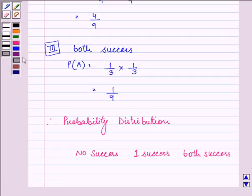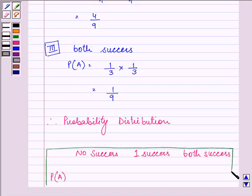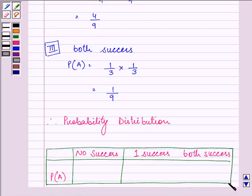Here we have to write down the probability. So, here we have the answers as 4 by 9, 4 by 9 and then 1 by 9.